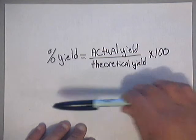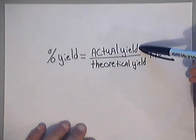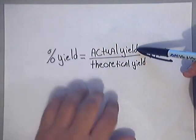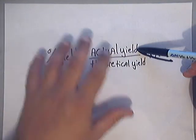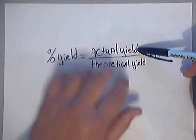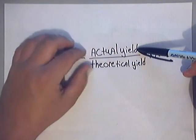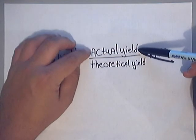Let me tell you what an actual yield is. An actual yield is where you go into a laboratory, you perform an experiment, you get a solid, a precipitant, or you get the product that you're looking for. That's the amount of the substance that you produce in a laboratory setting.